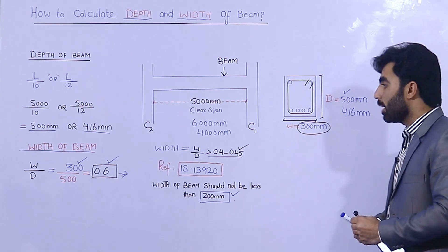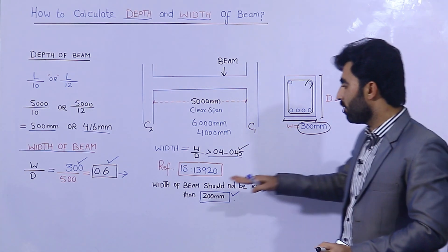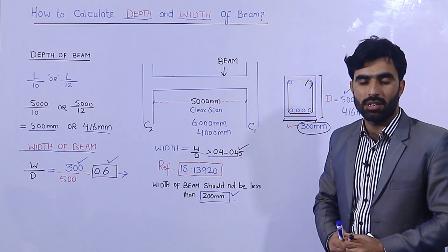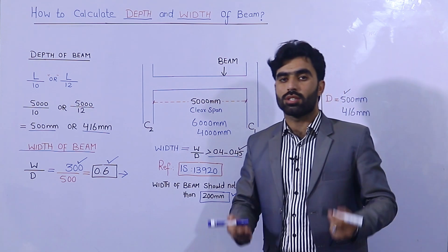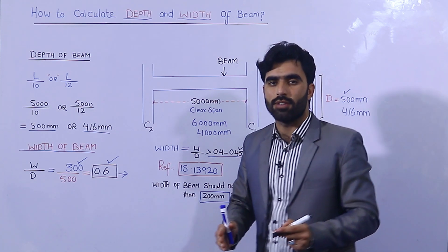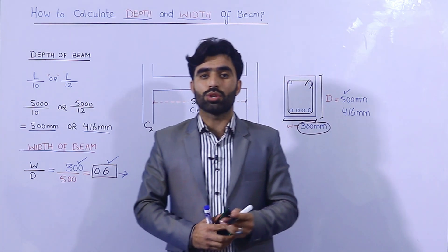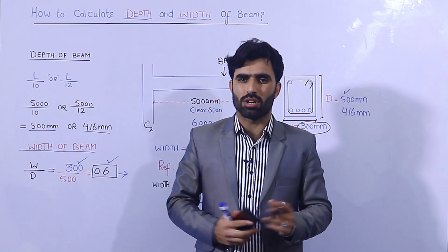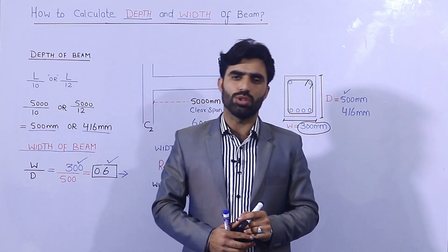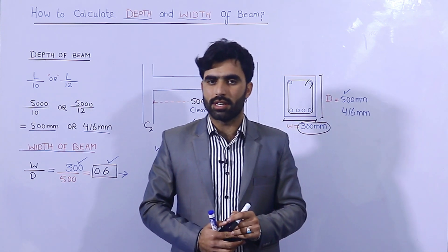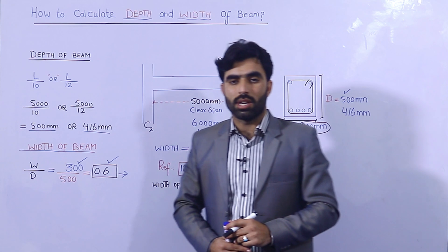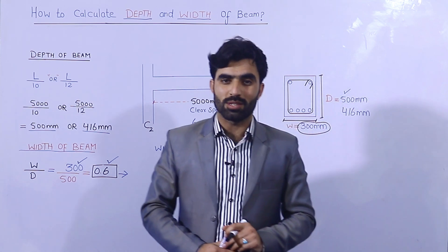So this is the way to find the depth and width of a beam by thumb rule, with reference to IS 13920 — not by full structural design, which requires knowing structural loads, beams, columns, and foundations. This formula is especially useful for normal people and can be applied for two-story or three-story buildings. Hope this short video helps. Thanks for watching — see you in the next video, goodbye!